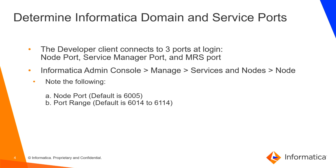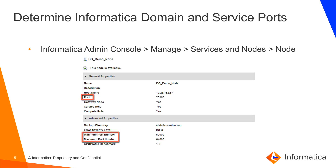To start, log in to the admin console and select Manage, Services and Nodes, and then select the node name in the left-hand panel. Note down the main node port and the port range on this page. In this example, the main node port is 25965, and the port range is 50,000 to 64,000.